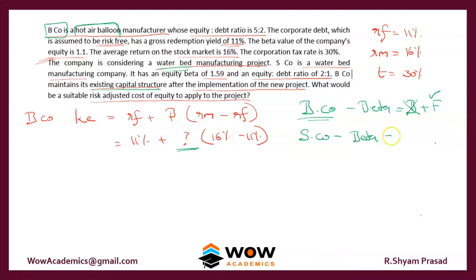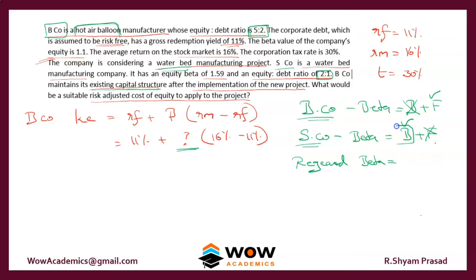If we take SCo's beta, SCo again has two risks: business and finance. They are in the business we want, but their capital structure is different. Bico's capital structure is 5 to 2, but SCo's is 2 to 1. Since Bico's capital structure is not going to change, we want the business risk of SCo but not its financial risk. Ideally, we want a new beta — a re-geared beta that takes the business risk of SCo and the financial risk of Bico put together.